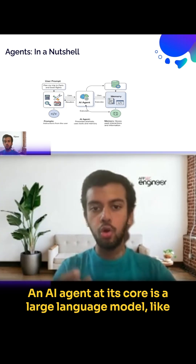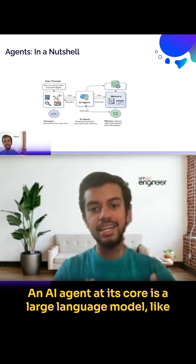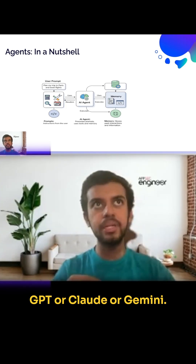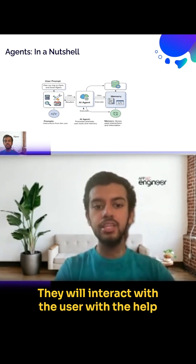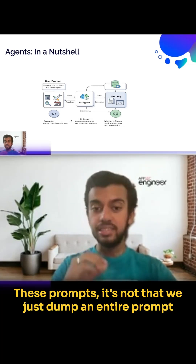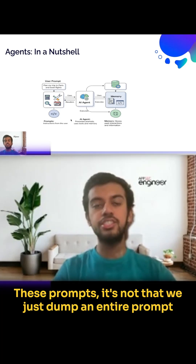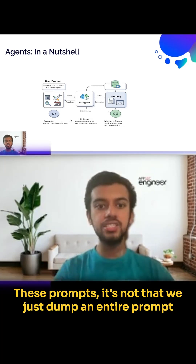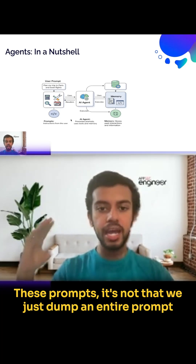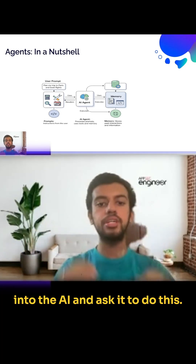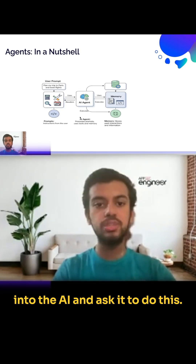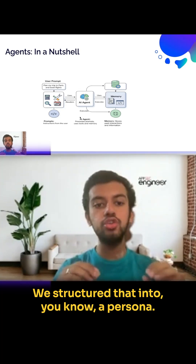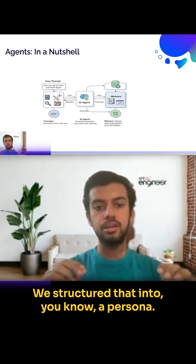An AI agent at its core is a large language model like GPT, Claude, or Gemini. They interact with the user with the help of prompts as well. But it's not that we just dump an entire prompt into the AI and ask it to do something — we structure that into a persona.